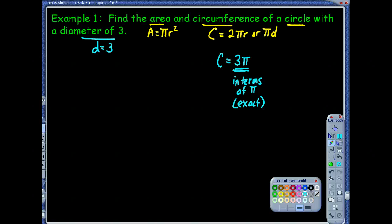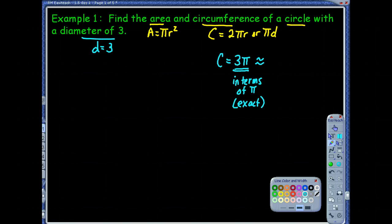Another answer I can get is a rounded answer. The reason why it's going to be rounded is because pi is actually not exact itself. That little squiggly equal sign means approximate — this means I'm rounding. What does pi represent? We know that it's around 3.14-ish, but it keeps going. We know that it's an irrational number. So if I wanted the approximate answer, how would I find that?